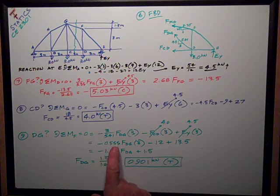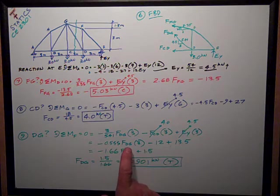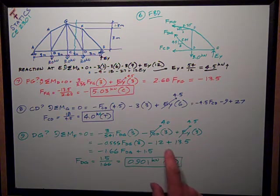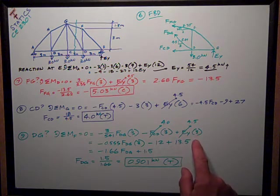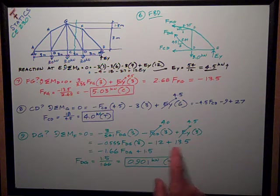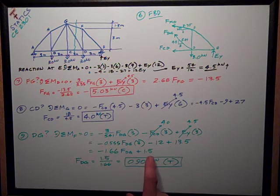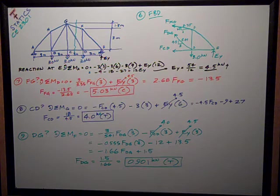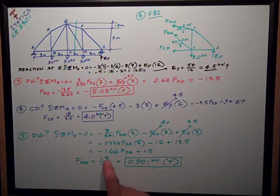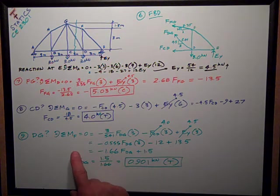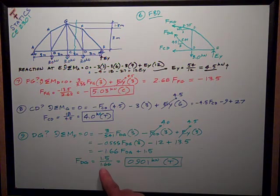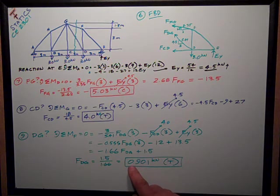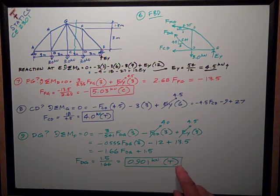Do all the math. Negative 0.555 FDG times 3, minus 4 times 3 is 12, plus 3 times 4.5 is 13.5. Continuing with the math, negative 1.66 FDG is plus 1.5. Move that over to the other side of the equal sign. FDG is equal to 1.5 divided by 1.66, 0.901 kilonewtons tension.